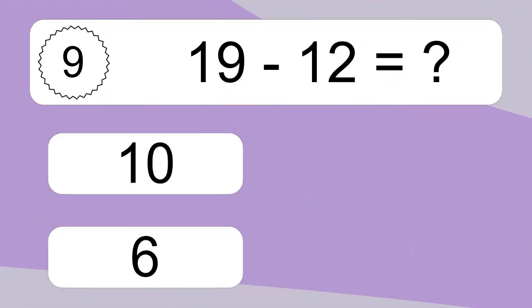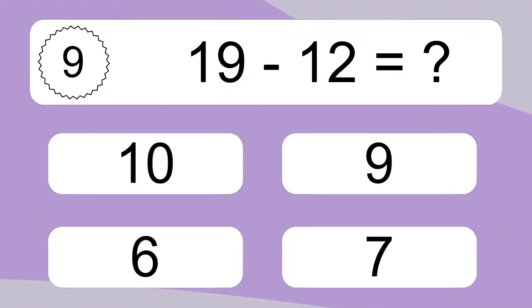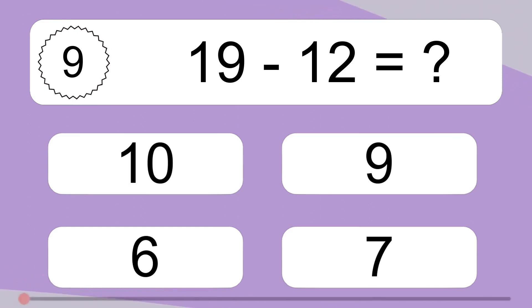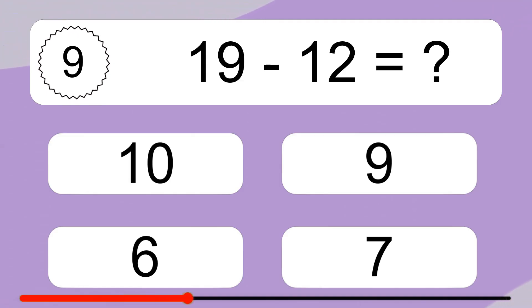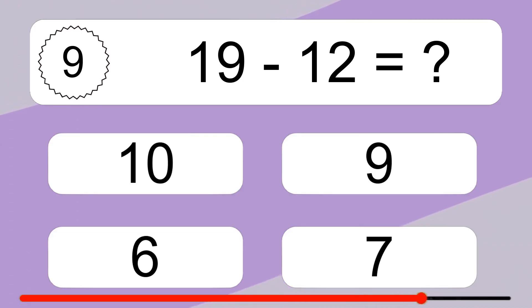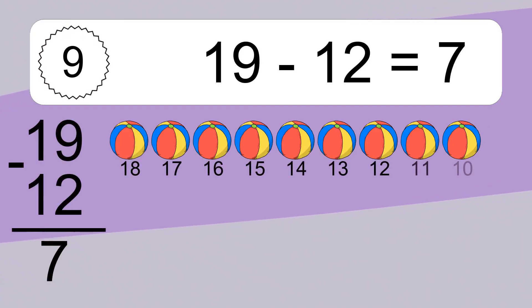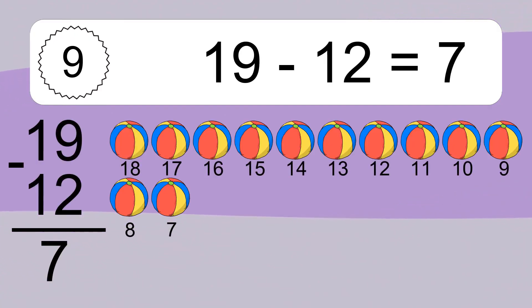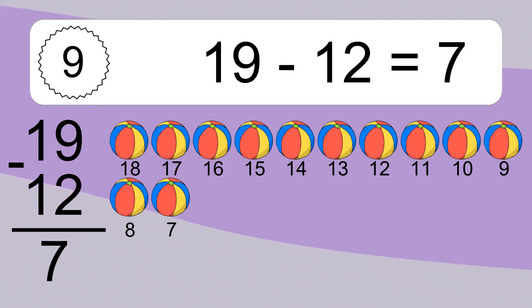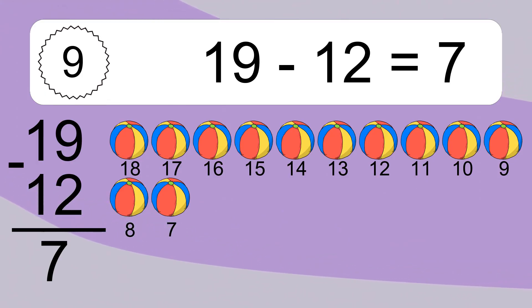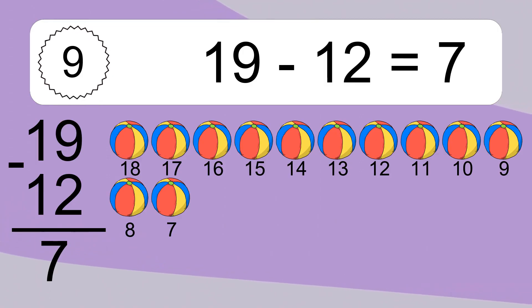19 minus 12 equals what? 19 minus 12 equals 7. Let's count it: 18, 17, 16, 15, 14, 13, 12, 11, 10, 9, 8, 7.